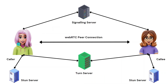Let's assume that we have two callers in a room — or you can say two persons, you can call them peers. This is our caller on the left side which is going to make a call to the callee on the right side.